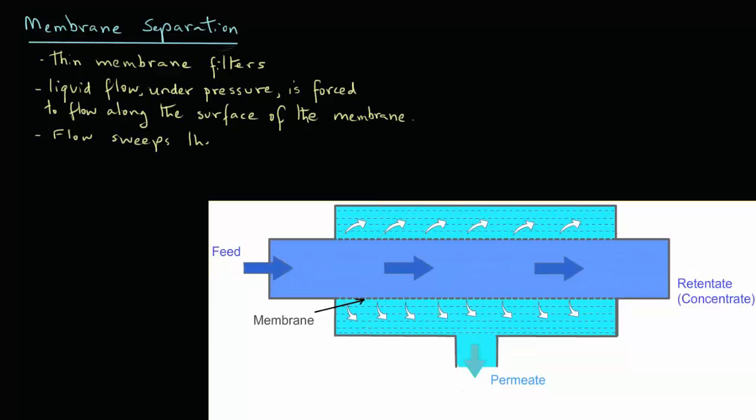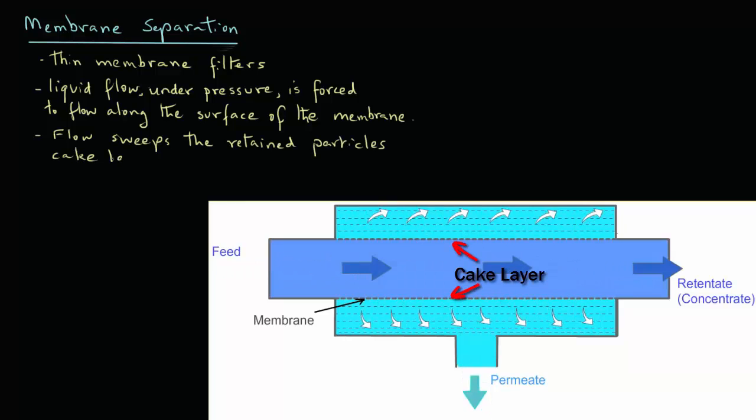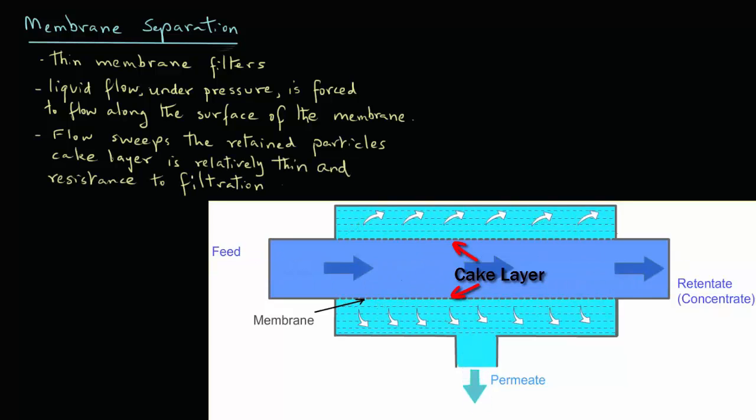The flow then sweeps the particles that get retained as a cake layer and the cake layer remains relatively thin. And therefore, the resistance to filtration remains low in comparison again to the dead-end filtration.